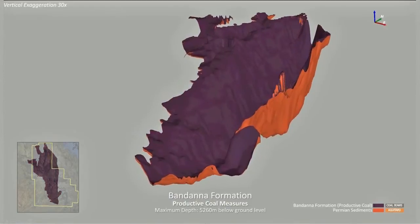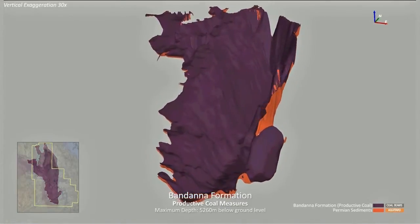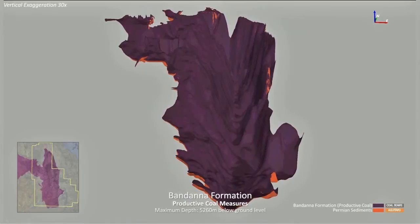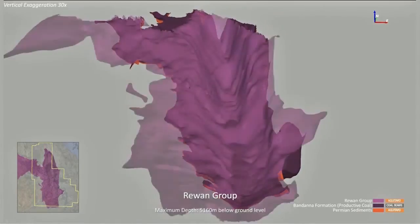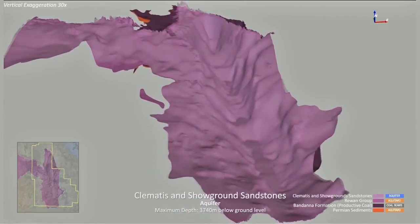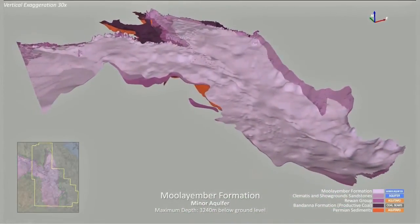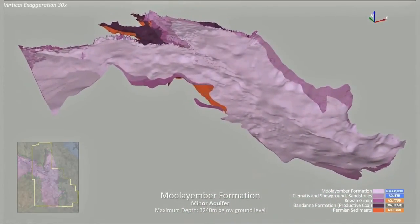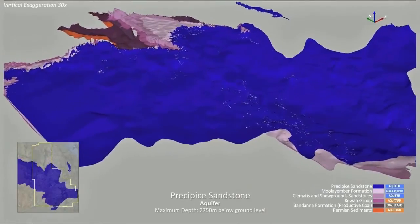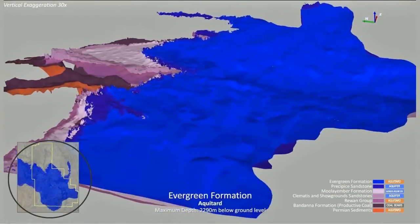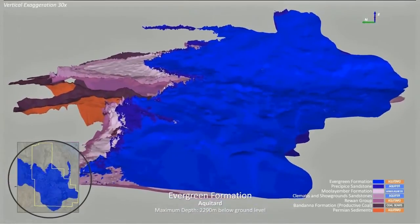The Bandana Formation is the target for coal seam gas extraction in the Bowen Basin. At its maximum depth, it is more than five kilometres below the surface. Note the geological formations do not fit perfectly over each other, and the shallower layers cover a wider area. The small map in the lower left corner shows the extent of the geological layer currently being viewed.